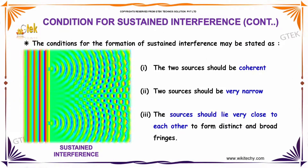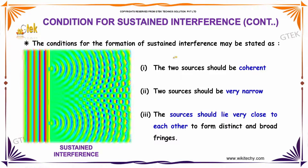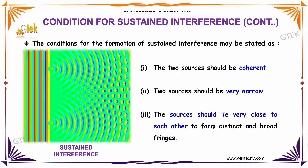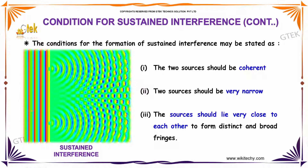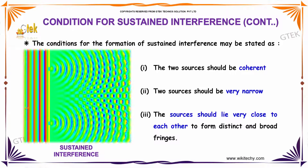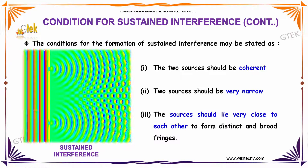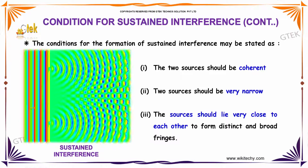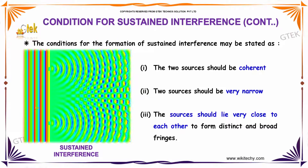The conditions for the formation of sustained interference may be stated as: the two sources should be coherent, the two sources should be very narrow, and the sources should lie very close to each other to form distinct and broad fringes.